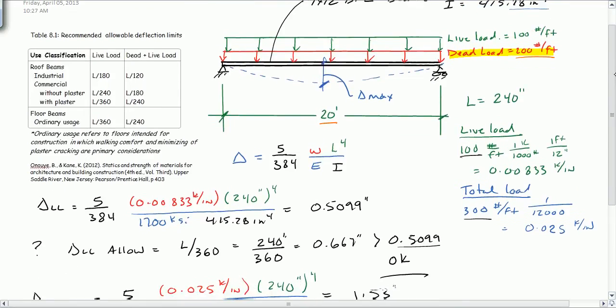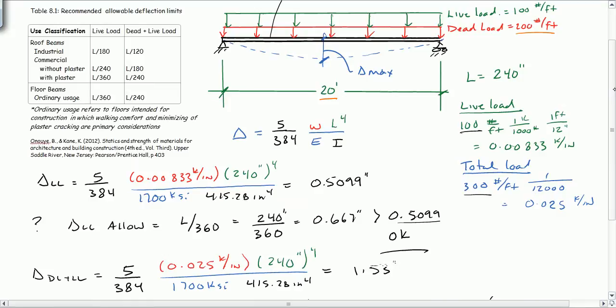We did the math on this. We found that the deflection under live load was about a half inch. I was allowed, based on ordinary floor beam usage of L over 360, of 0.67. So that tells me that this one was OK for live load.